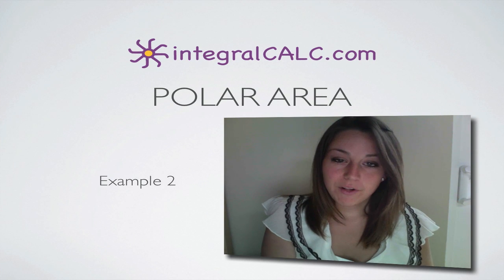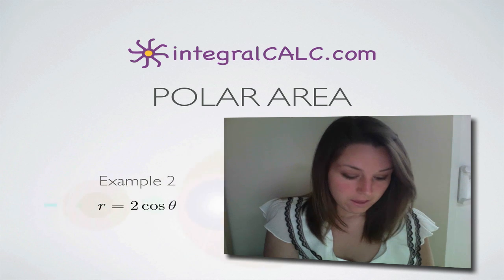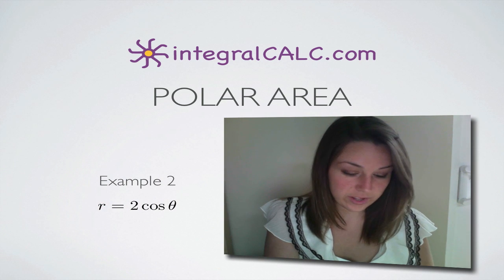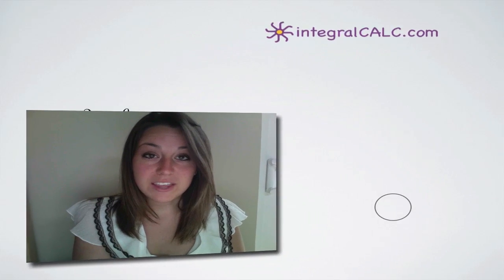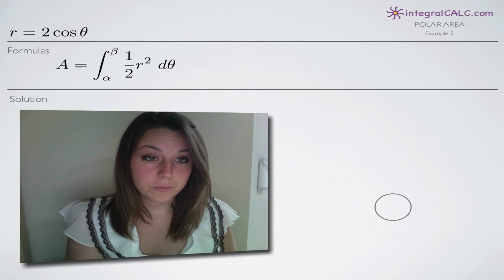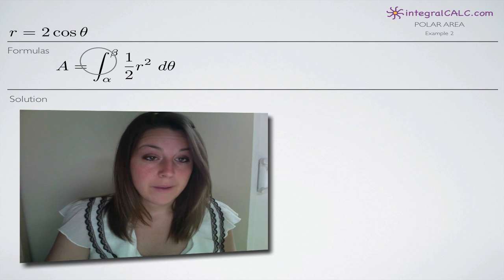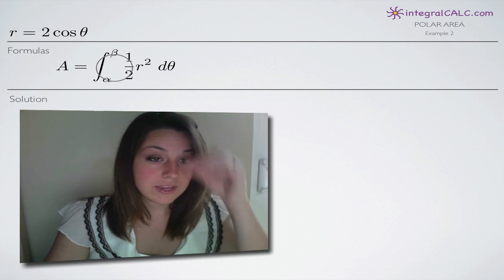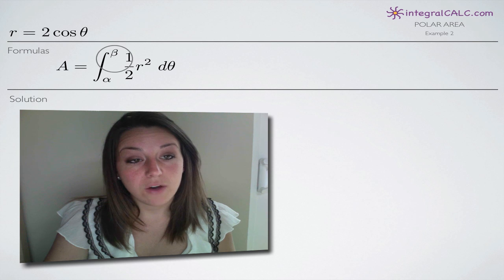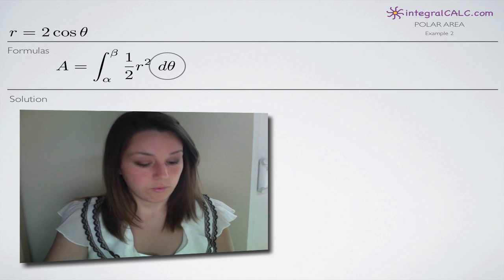Today we're going to be doing another example of how to find area in polar coordinates. The function we're given is r equals two cosine theta. As with any polar area problem, we're going to need a couple of formulas. The first is the polar area formula itself, which tells us we'll be integrating between the limits of integration alpha and beta.